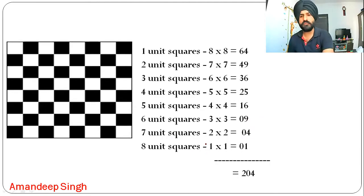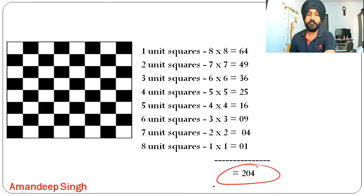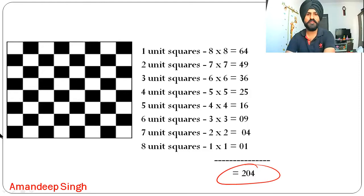The eight unit square contributes just 1. Adding everything up, the total number of squares is 204. So if anyone asks how many squares are on a chessboard, the answer is not 64, not 65 — it has to be 204. That is how you find the number of squares on a chessboard. Thank you.